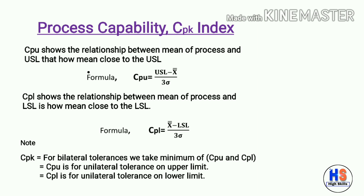CPL shows the relationship between the mean of the process and LSL. The formula for CPL is: CPL = (X̄ − LSL) / 3σ. For bilateral tolerance, CPK is taken as the minimum of CPU and CPL. CPU is for unilateral tolerance on the upper limit and CPL is for unilateral tolerance on the lower limit.